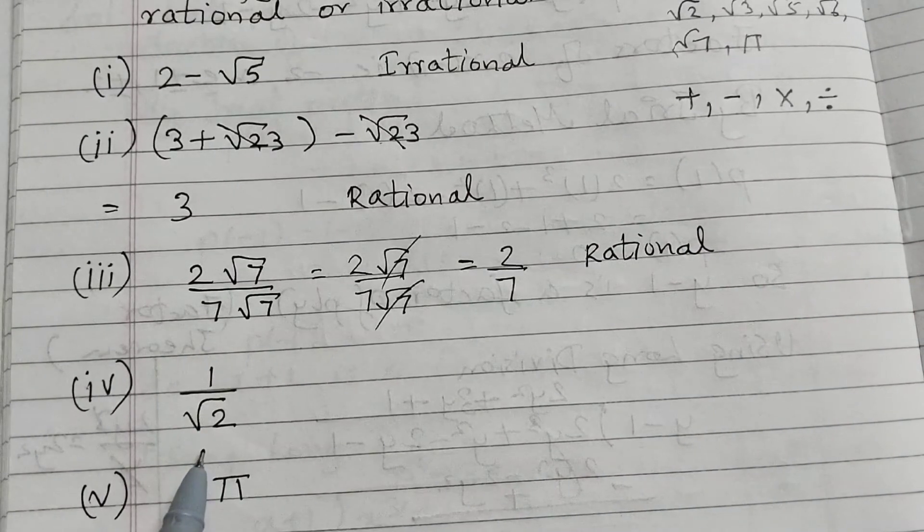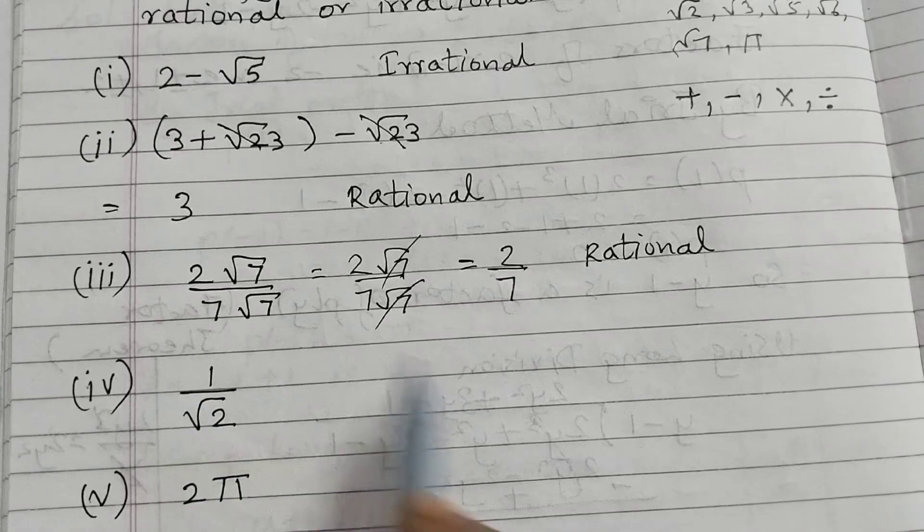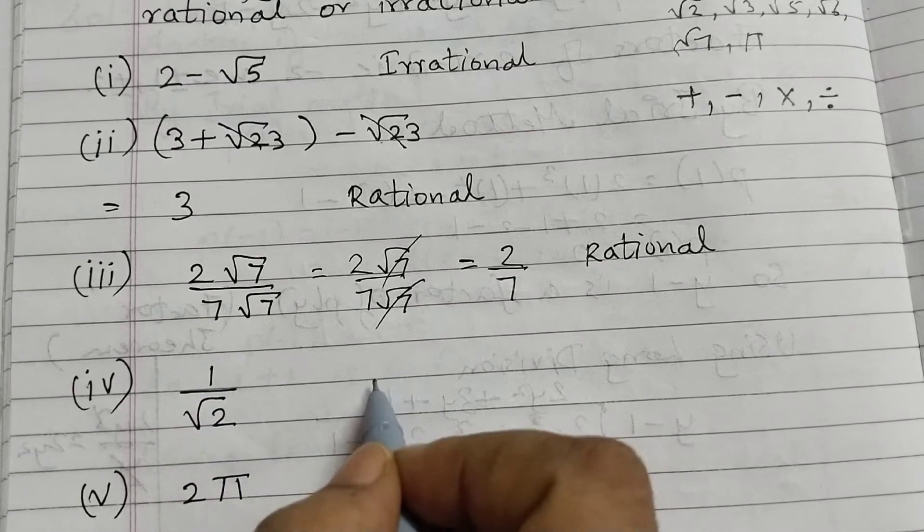1 by square root of 2. Rational number 1 divided by irrational number. So this whole thing will become irrational.